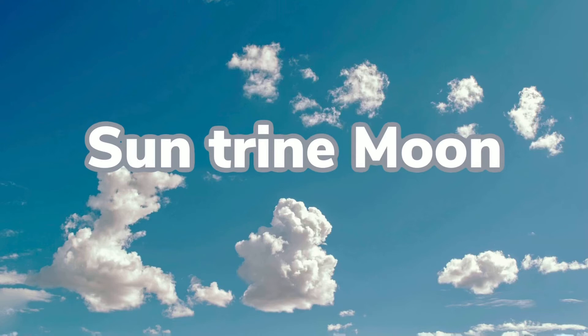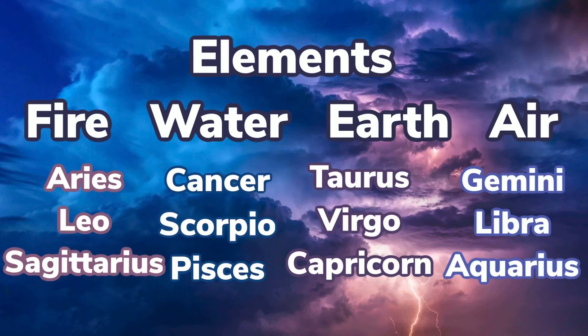Sun sextile moon and sun trine moon are very similar. When I'm talking about sun trine moon, this aspect is even more amplified. When someone's sun trines their moon, that means the two planets are 120 degrees from each other. It also means they're from the same element. So someone can have their sun in Taurus and their moon in Virgo, because Taurus and Virgo are both earth signs. Or if they have their sun in Aries, they could have their moon in Leo.